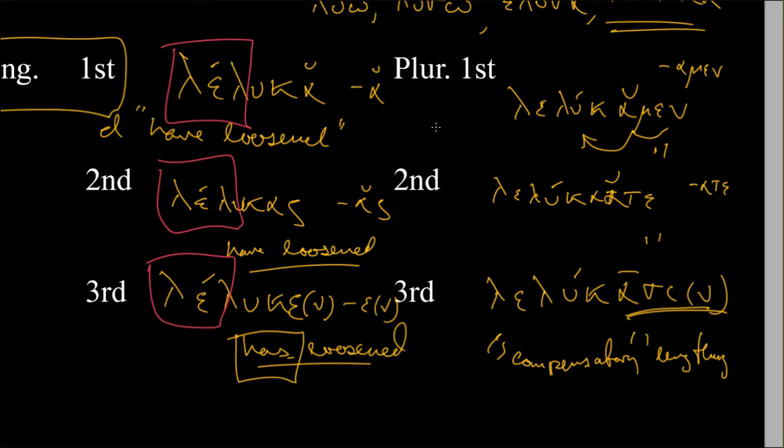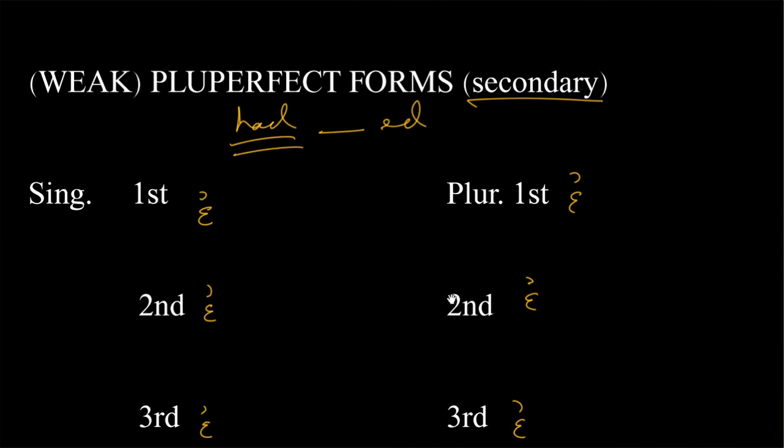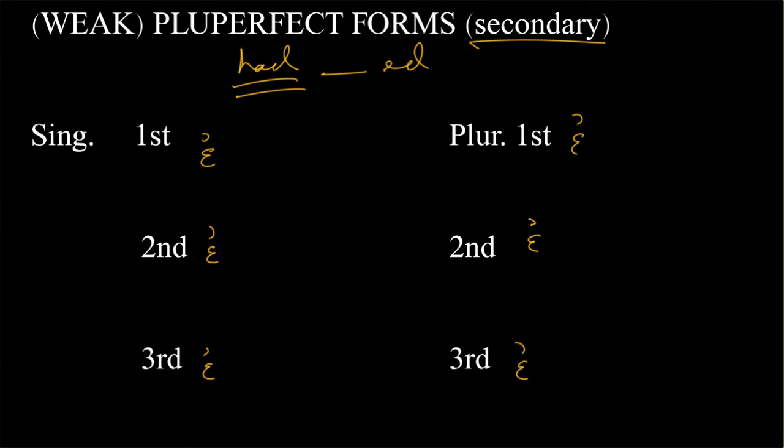So anyway, reduplication was the mark of the present in these athematic verbs. But in these thematic verbs, in these now what we're doing, perfect forms, perfects reduplicate. So that's why we're getting all these lambdas at the beginning. Of course, that can get complicated when your verb actually begins with a vowel, right? How do you reduplicate that? We'll cover that in a future lesson. But now we can kind of keep building those parts.